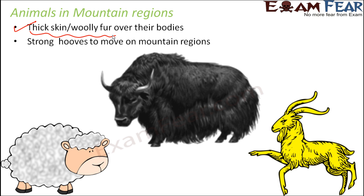These animals also have strong hooves to move in mountain regions. Hooves have a hard outer edge with a soft center. If you look at a sheep's feet, towards the bottom they have hooves that are very hard on the outside but have a soft center. These hooves help them to grip rocks and climb up. Mountains are made of huge pieces of rock, so walking or climbing through those rocks is not easy, but these hooves help them climb up very easily.